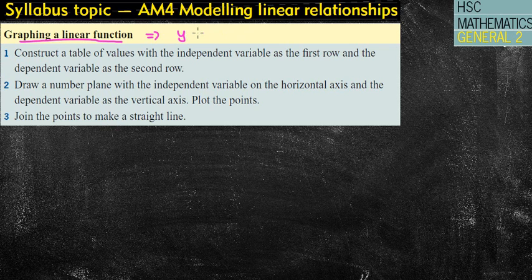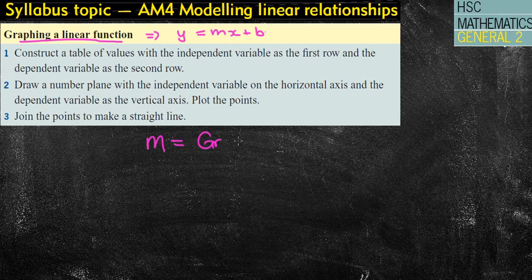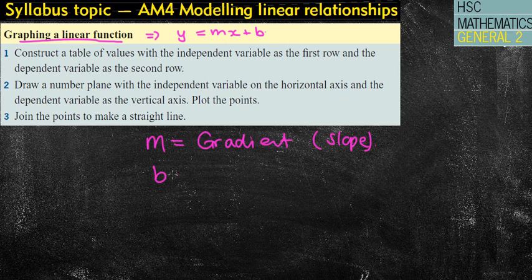Well, that's in the form of y equals mx plus b. It's a straight line graph, where the m represents the gradient value, which is like the slope or how steep something is. And the b represents the y-intercept, or where it cuts the y-axis.